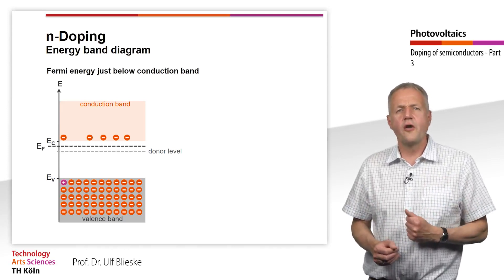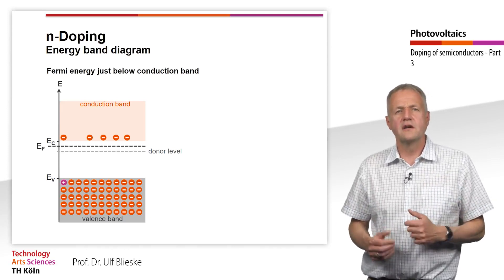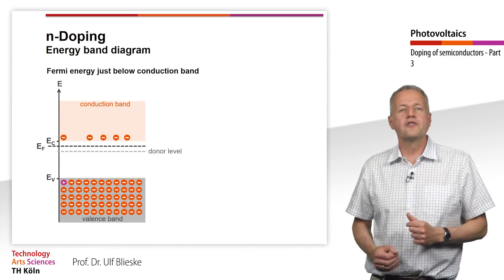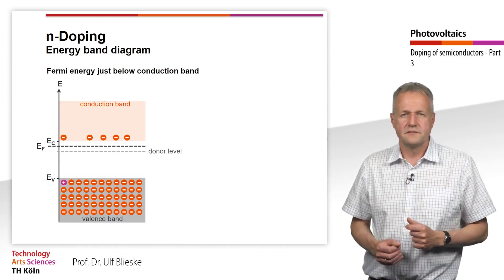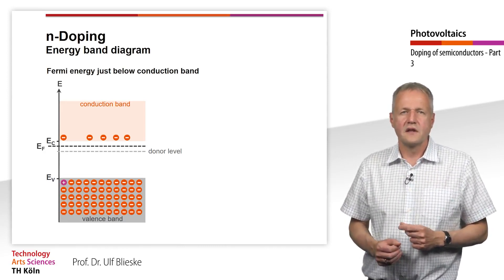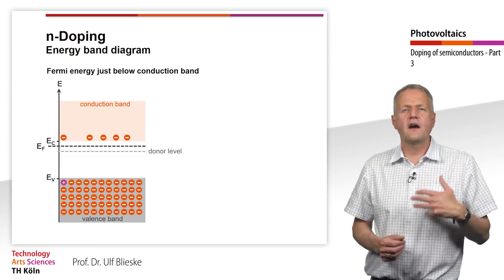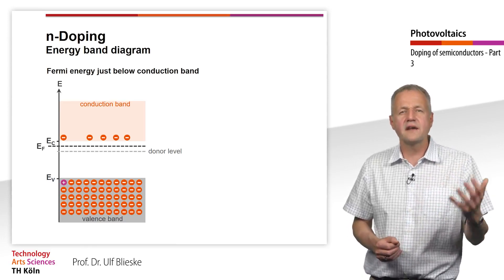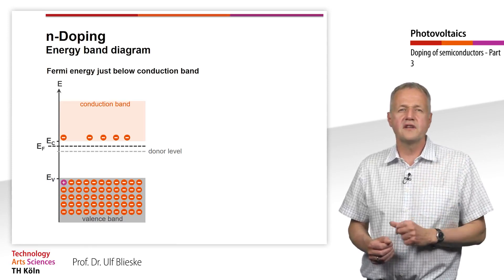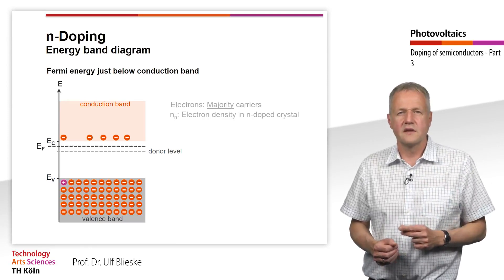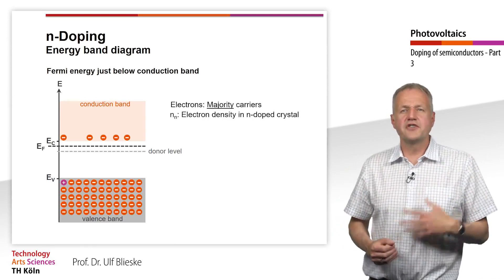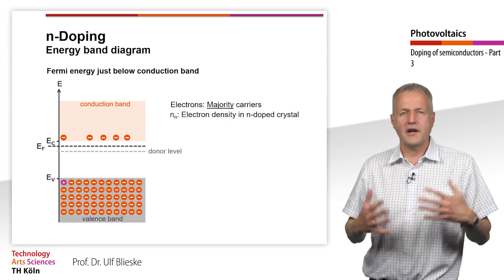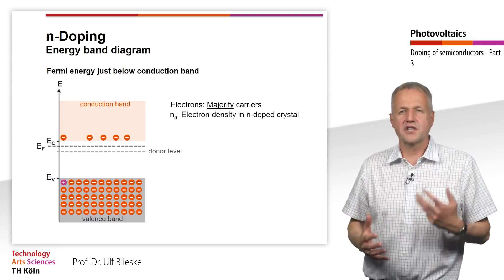This also increases the Fermi energy. Accordingly, the Fermi level is very close to the conduction band. In this way, there are then many more electrons in the conduction band than holes in the valence band. The electrons are in the majority; therefore, they are also called majority charge carriers.